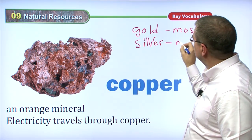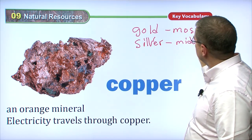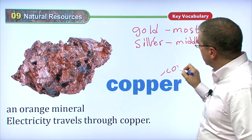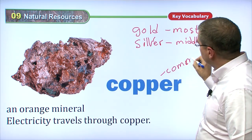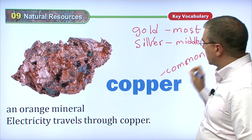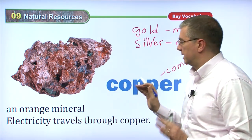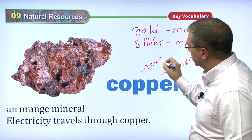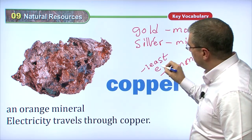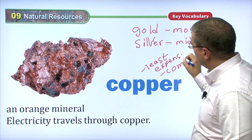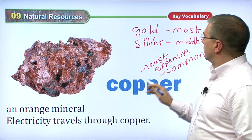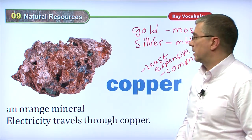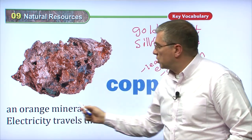And then we have copper — that's the least expensive. Gold is the most expensive, silver is in the middle, and copper is the least expensive. Copper is very common and also the least expensive. Copper is an orange mineral.